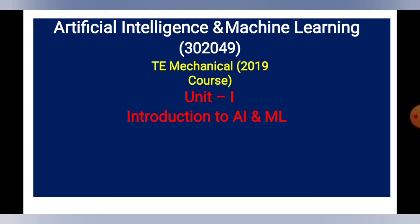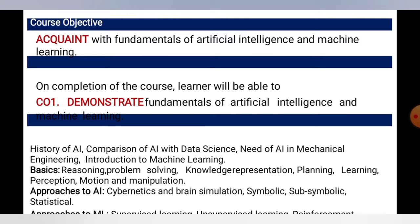Unit one is Introduction to AI ML, that is Artificial Intelligence and Machine Learning. From slide one onwards, AI means Artificial Intelligence and ML means Machine Learning — this abbreviation I am going to use from here onwards. The core objective is to acquaint students with the fundamentals of AI and ML, and the outcome is to demonstrate those fundamentals with the help of suitable applications and examples.